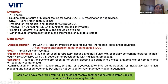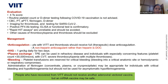VITT management includes anticoagulation with a non-heparin anticoagulant rather than heparin. Immunoglobulin can be given at 1 gram per kg for approximately 2 days. If both do not work, plasma exchange is an option. Platelet transfusion is only for critically bleeding patients — otherwise it is contraindicated. People who have recovered from VITT should not receive another adenoviral vector vaccine; however, an mRNA vaccine may be safe if vaccination is required.